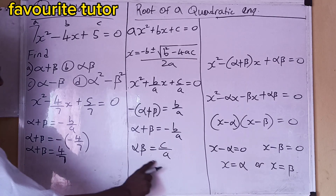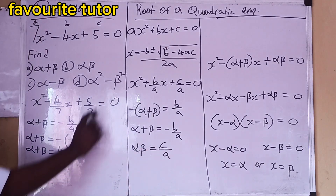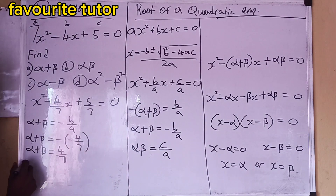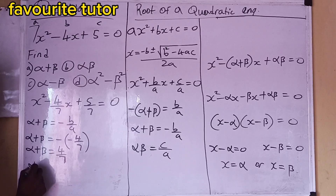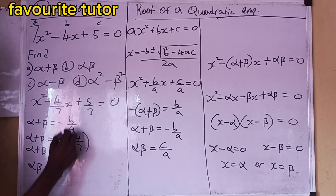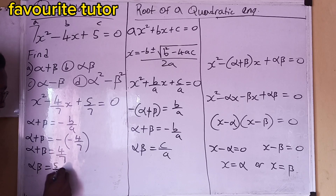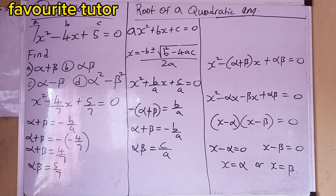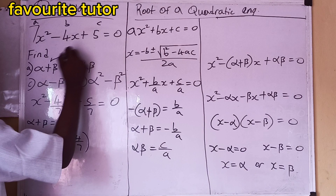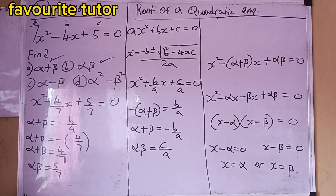Now, the product of the roots: alpha·beta equals c over a, which is 5 over 7. So ladies and gentlemen, we have answered parts (a) and (b).